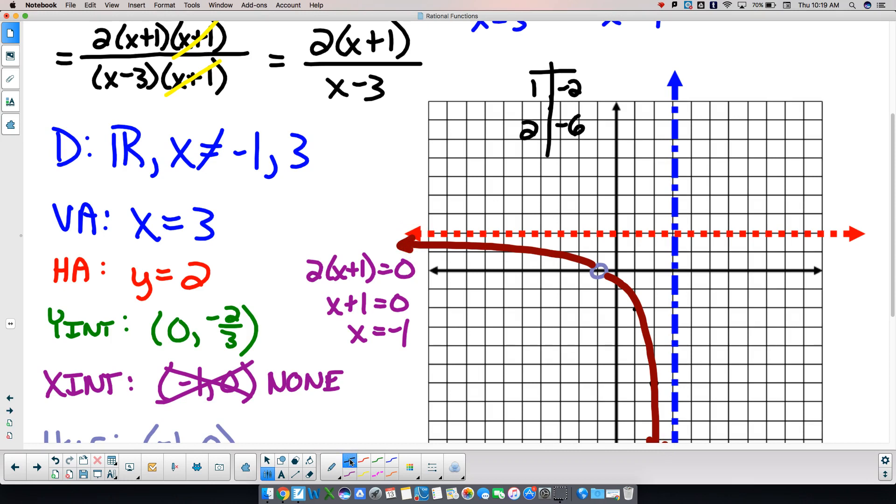Over here, let's go with 4. 4 plus 1 is 5, times 2 is 10. 4 minus 3 is 1, so that's at 10. 5, 5 plus 1 is 6, times 2 is 12, divided by 2 is 6. Let's go 7 next. 8, 16 over 4 is 4. Okay, so that's enough over there.